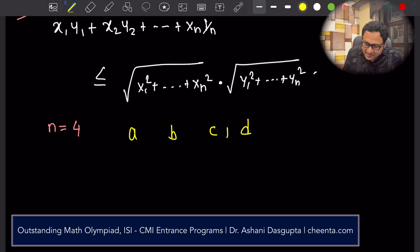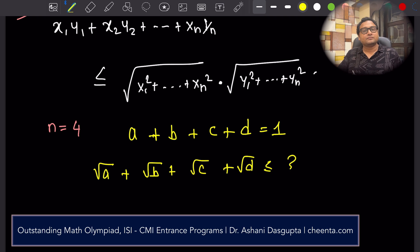The same thing would work for a general n. I'll do it for 4 just so our brain takes it easy. So we have a, b, c, d. Sum of these numbers is given as 1. We want square root of a, square root of b, square root of c, square root of d less than or equal to what? That's the question.